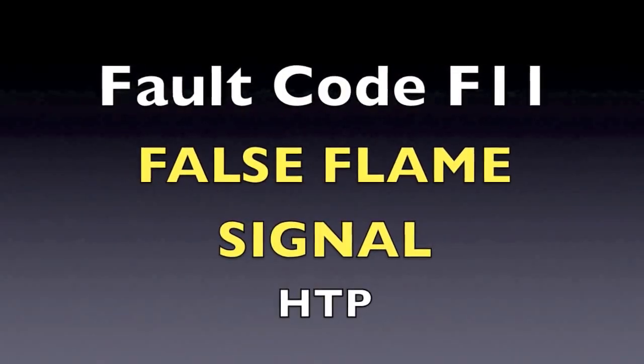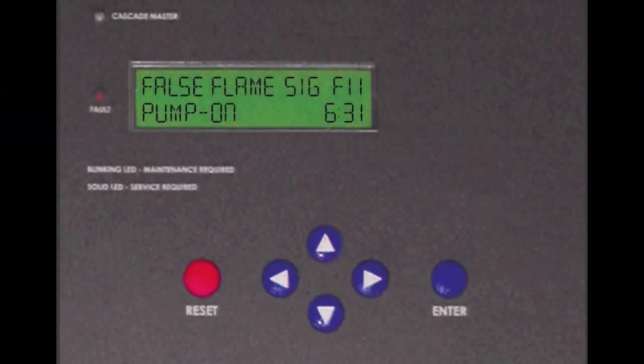If you are getting an F11 code, this indicates that there is a flame signal when the controller is in standby and the heater is not currently operating.